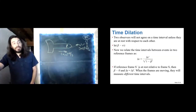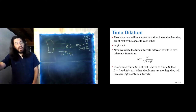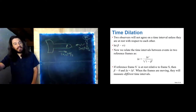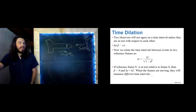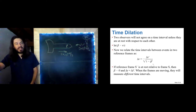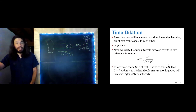If reference frame S′ is at rest relative to S, then beta goes to zero, delta T′ equals delta T, and we measure the same time interval. But if beta is not zero, then the two observers will measure different times.